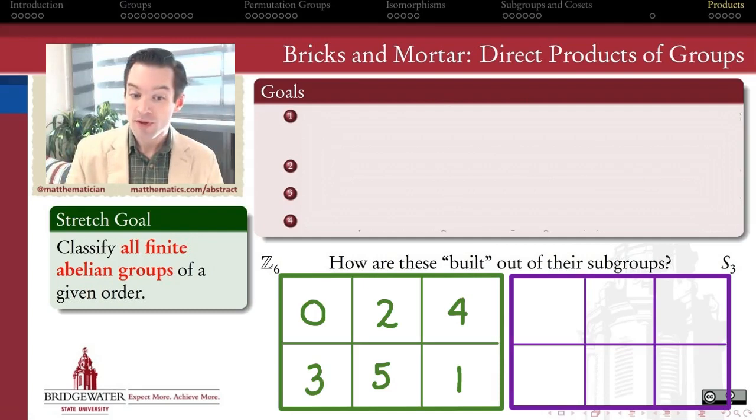I chose this example because these two groups have the same order. They both have six elements in them, and also inside of each of them we can identify two very similar subgroups.